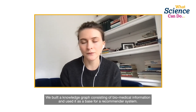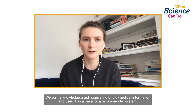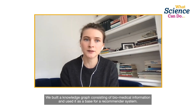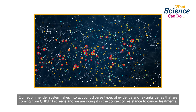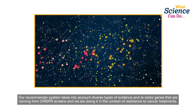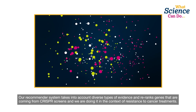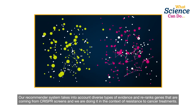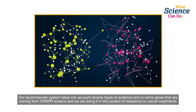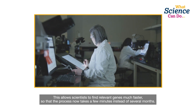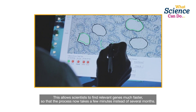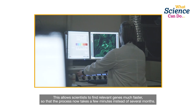We built a knowledge graph consisting of biomedical information and used it as a base for a recommender system. Our recommender system takes into account diverse types of evidence and reruns genes coming from CRISPR screens, in the context of resistance to cancer treatments. This allows scientists to find relevant genes much faster, so that the process now takes a few minutes instead of several months.